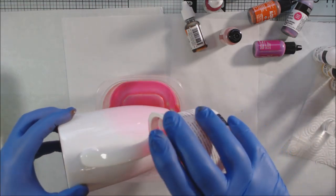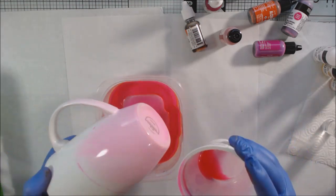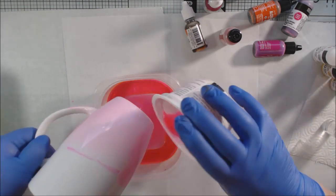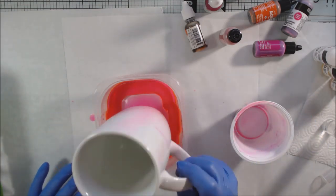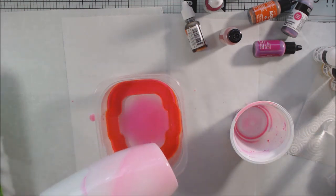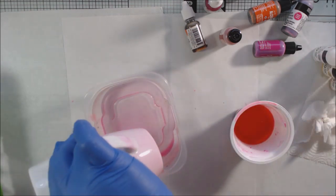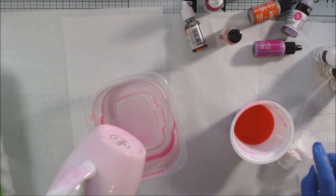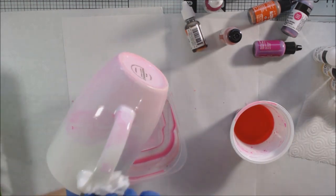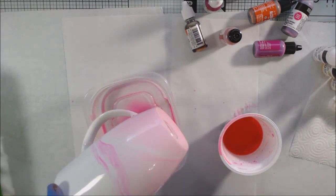The first thing I did was clean the mug really well with rubbing alcohol and a paper towel to make sure there wasn't any oils or dirt anywhere so the alcohol ink would adhere. That's an important step because our hands have oils on them, even though they might seem dry, and that could interrupt the flow of the ink.